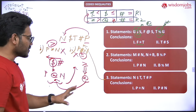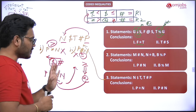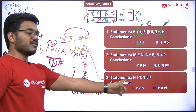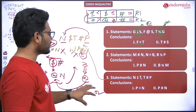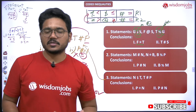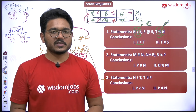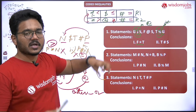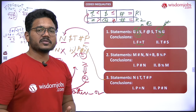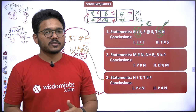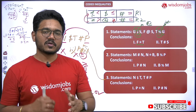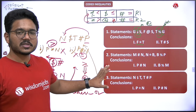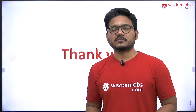So the answer for question three is: either the first or the second conclusion follows. This is how we solve coded inequalities in examination question papers. By framing the box and following the procedure, which is clearly explained in our basic introduction video to coded inequalities, you can solve any type of problem. Do watch that video for a clear concept.